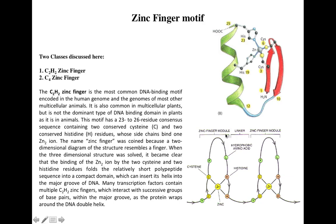In the case of C2H2 zinc finger proteins, they are called C2H2 because they have two conserved cysteine residues and two conserved histidine residues. These residues are connected to a zinc ion in the center. The binding of these two cysteine and two histidine residues leads to the formation of a compact domain which also contains an alpha helix, and this alpha helix can insert itself into the DNA and interact with it.